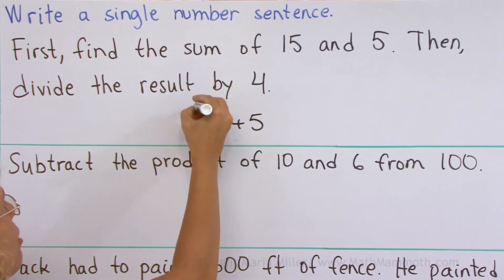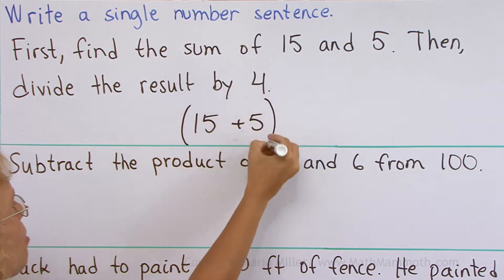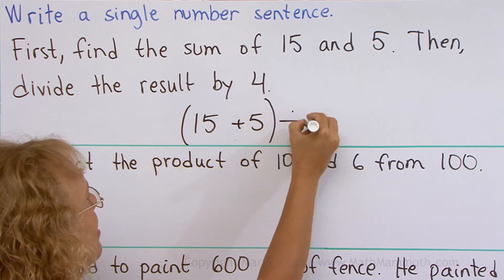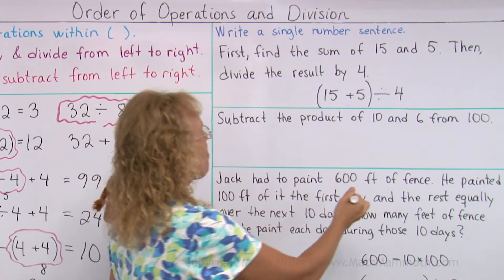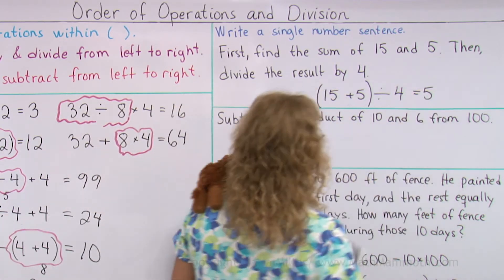So this is what I will do. I'll put this in parenthesis to make sure that's done first, and then divide by 4, right? That would be 20 divided by 4 equals 5.